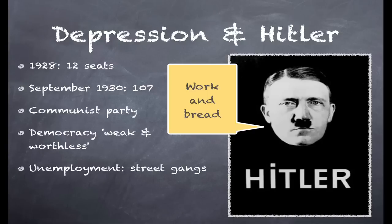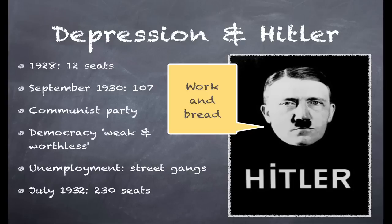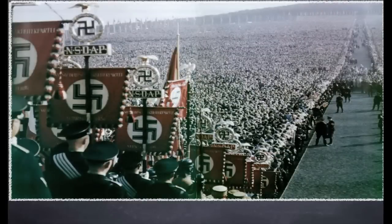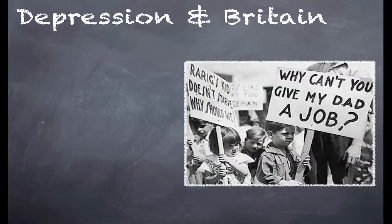A lot of unemployment meant that people joined street gangs — communist street gangs and the street gangs of the Nazi Party — so there was violence. Hitler used the fact that his Brownshirts, his street gangs, gave an impression of order. Together with propaganda and other things, by July of 1932 the Nazi vote had risen to 230 seats. So the Depression was certainly one factor which helped Hitler gain power. They also used mass rallies and the psychology of enormous crowds to create emotion and give an idea of organisation in the chaos of Germany.